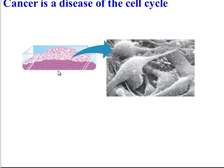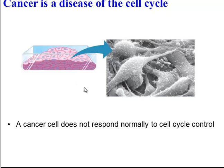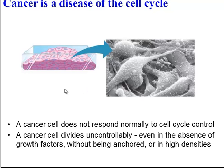This leads us to cancer. Cancer is directly related to the cell cycle because it's a disease of the cell cycle. The problem with cancer cells is that they are growing and dividing when they should not be. A cancer cell does not respond normally to cell cycle control — it may divide even if there are no growth factors, even if it's not anchored to a surface, or even if the density is really high. All three of these things should prevent cell division, but a cancer cell ignores them.